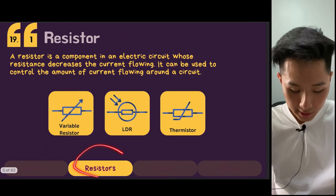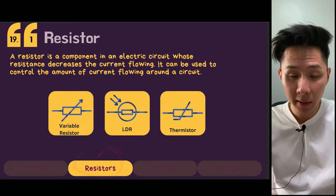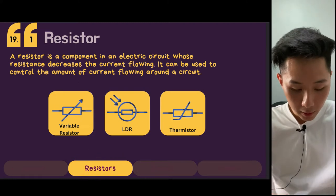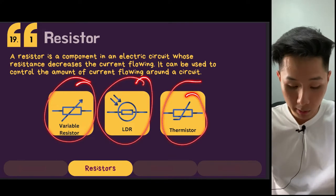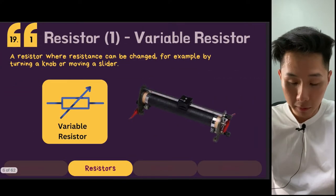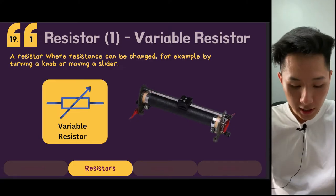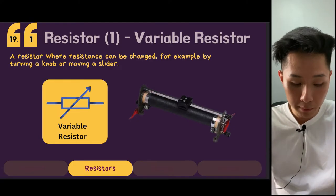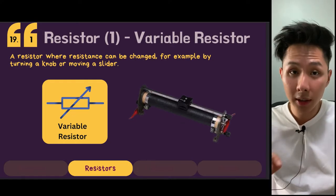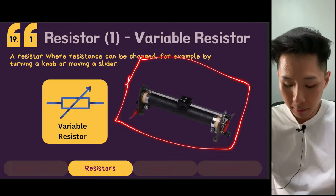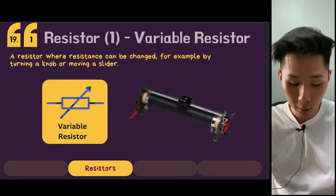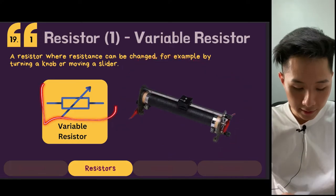The first component is resistors. There are many types of resistors: variable resistor, LDR (light-dependent resistor), and also thermistor. Let's look into the first one — the variable resistor. A resistor in which its resistance can be changed, for example, by turning a knob or moving a slider. Here I have a diagram of how a variable resistor looks like, and this is its symbol.